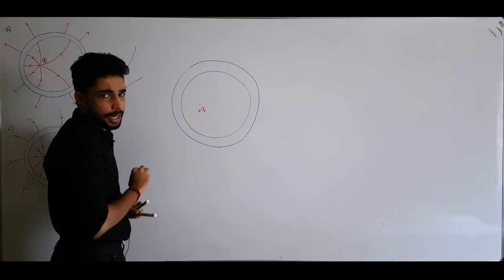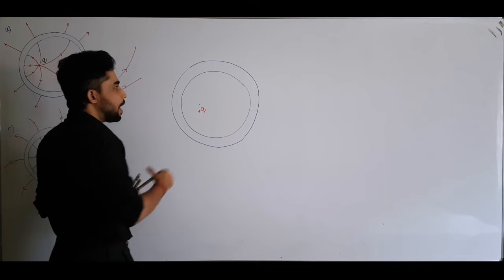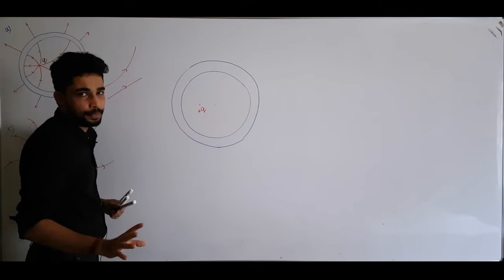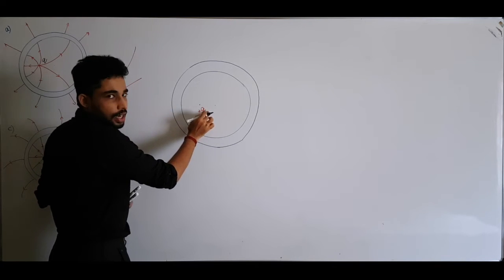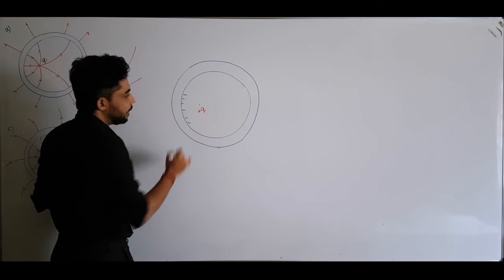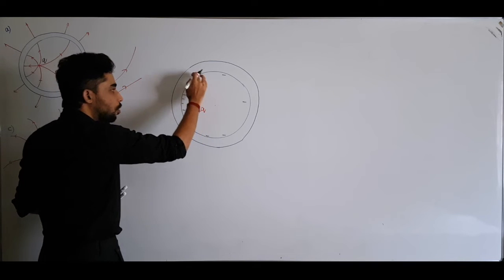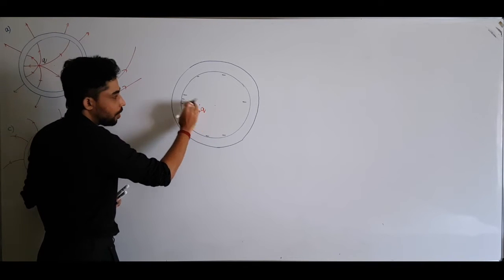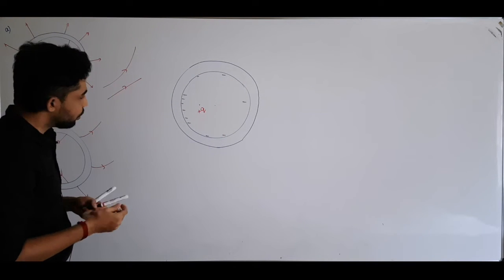When the charge was at the center, the negative charges induced on the inner surface were uniform — the same amount at every point. But when you move the positive charge off-center, it attracts more electrons from the nearby region of the shell. So more electrons collect on the side closer to the charge, and fewer on the far side, making the charge distribution on the inner surface non-uniform.